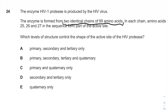We have primary structure, which is just a sequence of amino acids. We have secondary structure, made of alpha helices and pleated sheets. In general, it's the hydrogen bond interactions between the backbone of the amino acids.